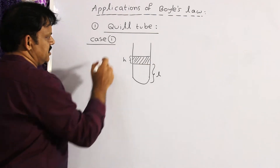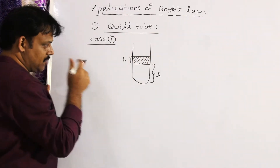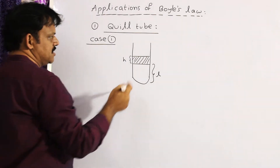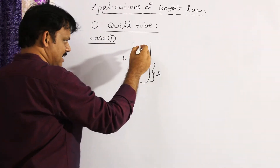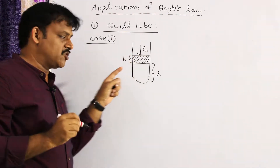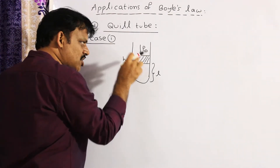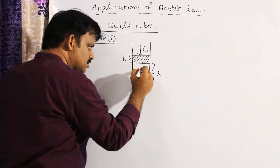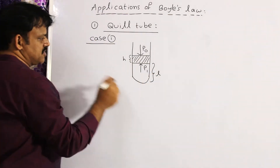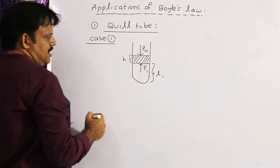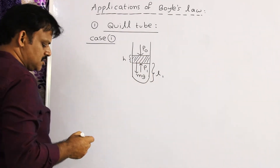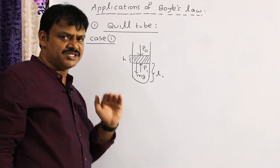First case: the open end is upwards. The mercury pellet will be under equilibrium because the net force acting on it is zero. Atmospheric pressure P0 acts on the mercury pellet in the downward direction, and there will be some pressure acting on the mercury pellet by the trapped air, which acts upward. I will call that pressure P1, and the length of the air column as L1. The weight of the mercury pellet always acts vertically downwards.